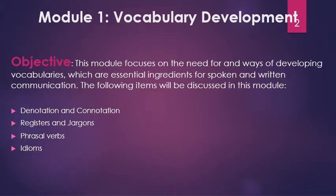Module One, as I have said: vocabulary development. The main objective of this course is to prepare the student's mind on the need for and the way of developing their vocabularies, as an essential ingredient for spoken and written communication. The following items will be discussed in this module: denotation and connotation, register and jargon, phrasal verbs, and idioms.